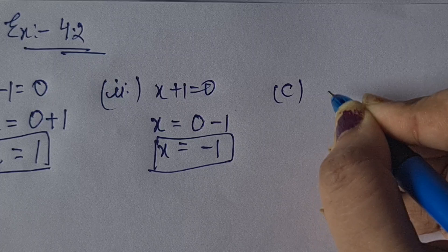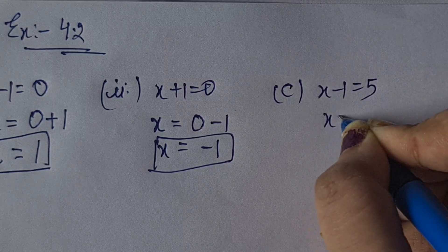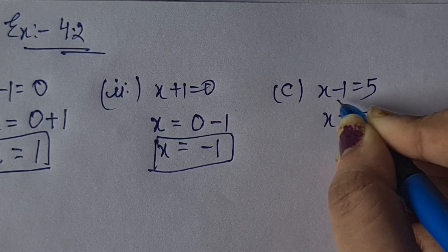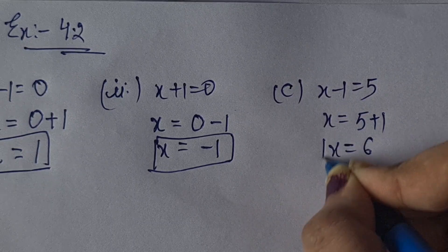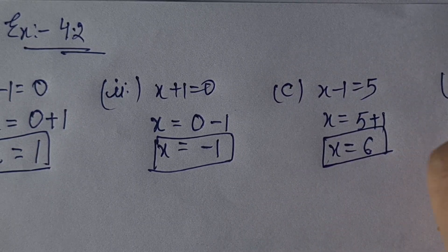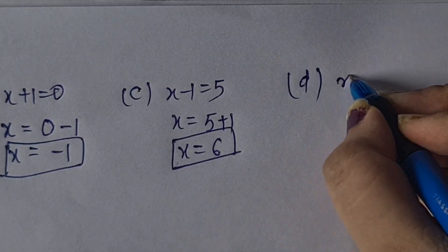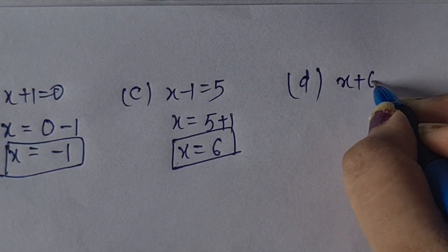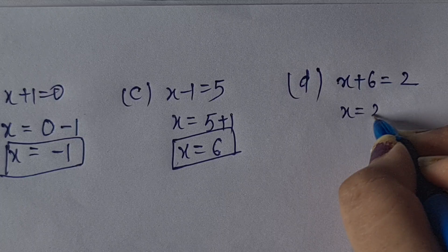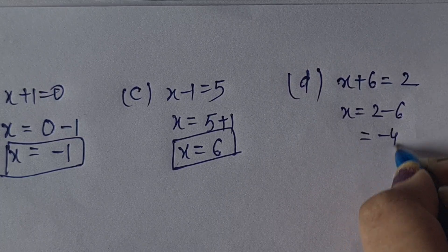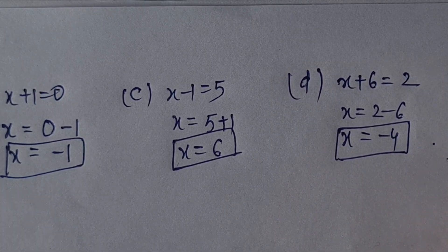C part: x minus 1 = 5. So x = 5 + 1 = 6. D part: x + 6 = 2. So x = 2 minus 6 = minus 4. x equal to minus 4 is the answer.